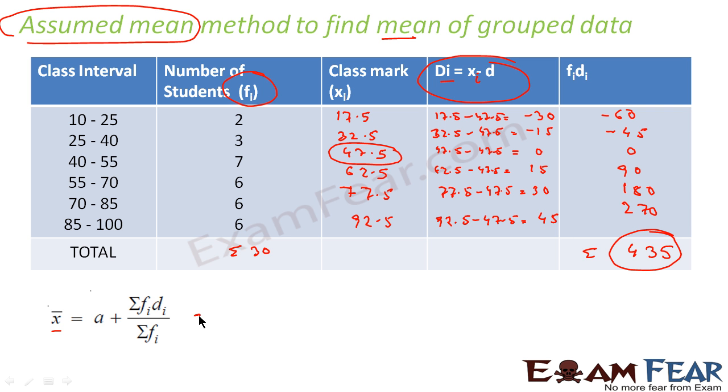Now I am using the formula: a plus sigma fi di by sigma fi. So here what is the value of a? Assumed mean was 47.5. That is 47.5 plus sigma fi di is 435 by sigma fi is 30. If you solve this, this becomes 47.5 plus 435 by 30 is 14.5, and this comes out to be 62.